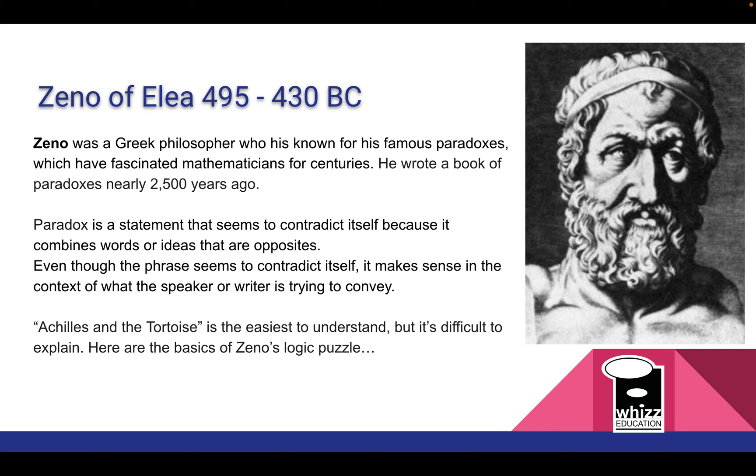One of the paradoxes that Zeno wrote was Achilles and the Tortoise and it's one of the easiest to understand but it's one of the most difficult to explain. So here are the basics of Zeno's logic puzzle.